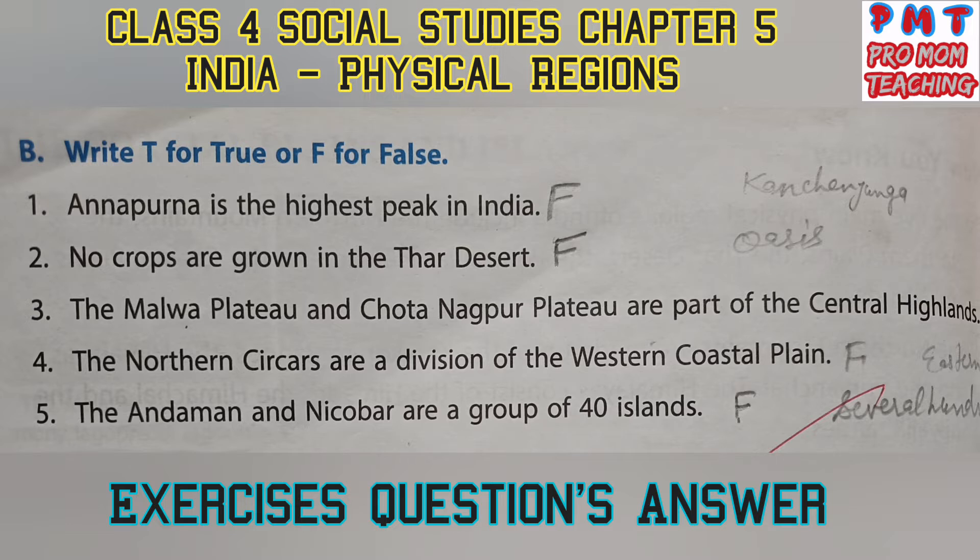Fifth: the Andaman and Nicobar is a group of 40 islands — it is false, because Andaman and Nicobar is a group of several hundreds of small islands. Lakshadweep is a group of about 40 islands.